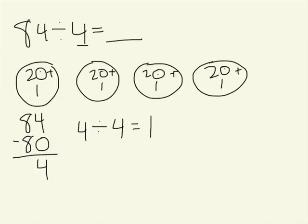So if I add up how much is in each group, I have 20 plus 1, or 21.